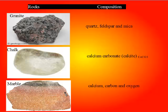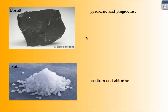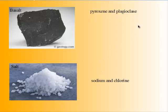Marble, which is a metamorphic rock, is formed from calcium, carbon, and oxygen. Basalt is formed from pyroxene and plagioclase. And salt is formed from sodium and chlorine. These are some examples of the mineral composition of rocks that exist.